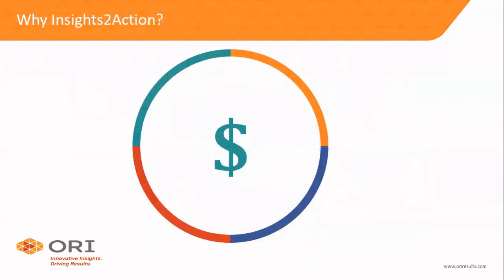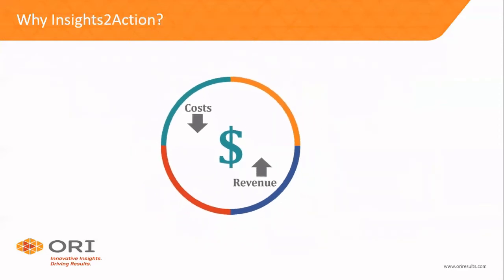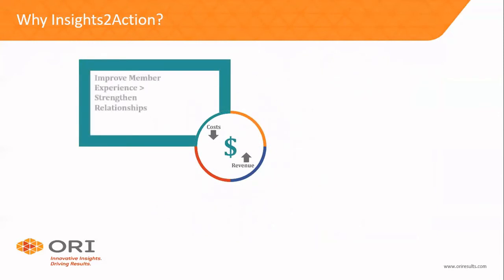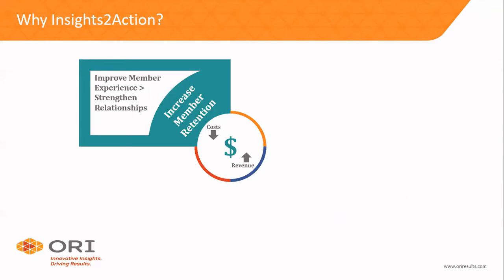Why do this systematic listening? Every organization we've ever worked with is either looking to get costs down or revenue up. For associations, a very high priority is improving member experience, strengthening relationships, and increasing retention. As one example, we have a client with about 50,000 members at $300 per membership and a 60% retention rate. They want to reach 65%. That five percentage point bump represents $750,000 in revenue — so the implications can be very significant.